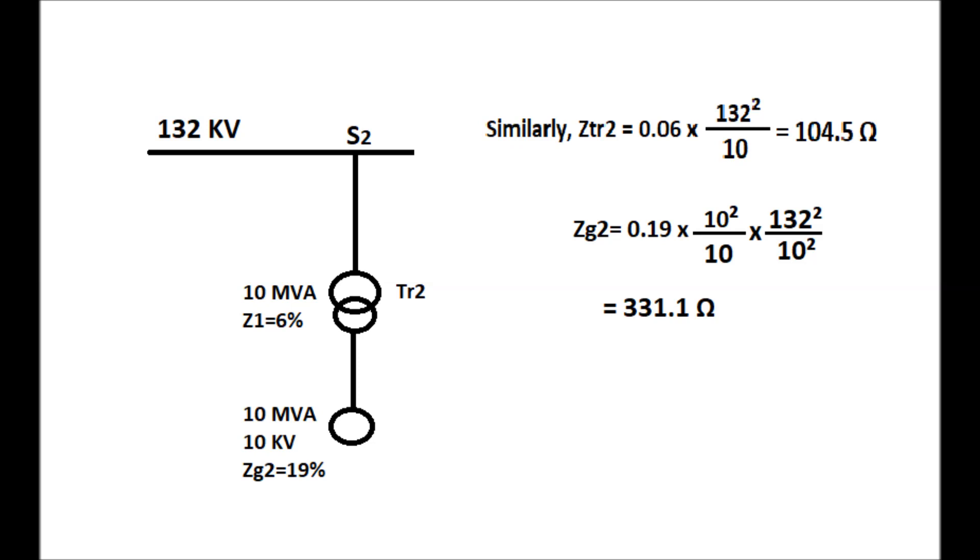Similarly, ZTR2 equals 0.06 times 132 squared by 10, which equals 104.5 ohm. ZG2 equals 0.19 times 10 squared by 10 times 132 squared by 10 squared. That will come to 331.1 ohm.